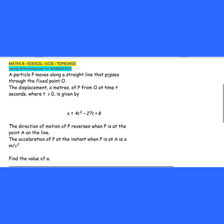A particle P moves along a straight line that passes through the fixed point O. The displacement x metres of P from O at time t seconds, where t is greater than or equal to 0, is given by x equals 4t² minus 27t plus 8.